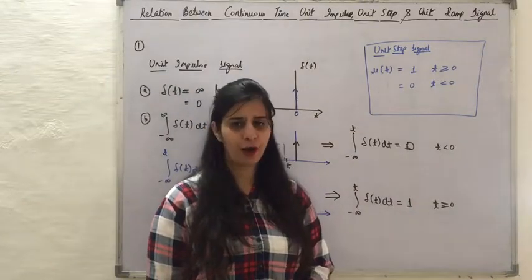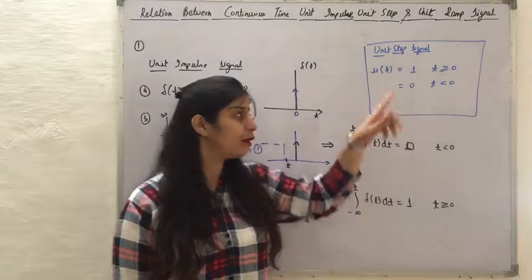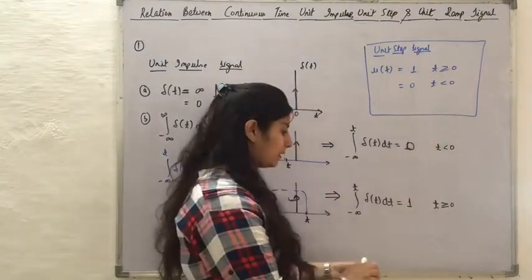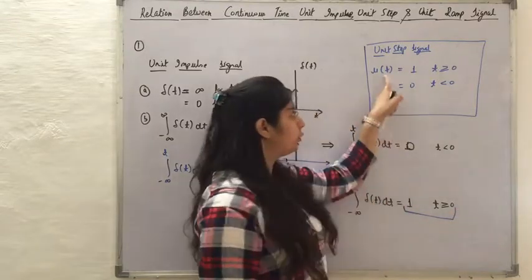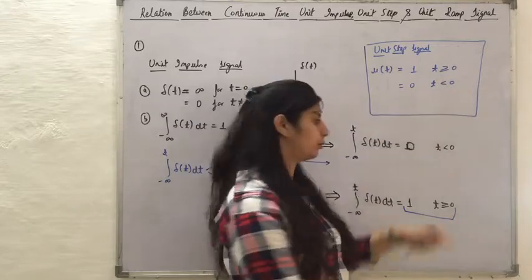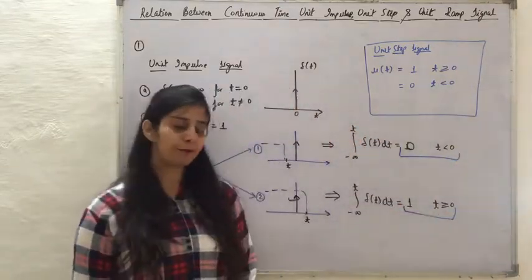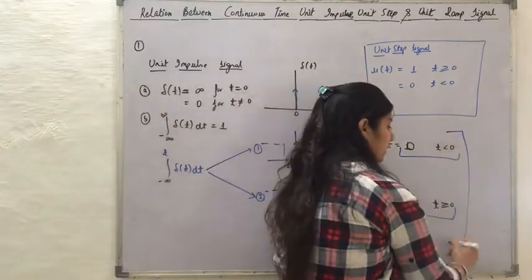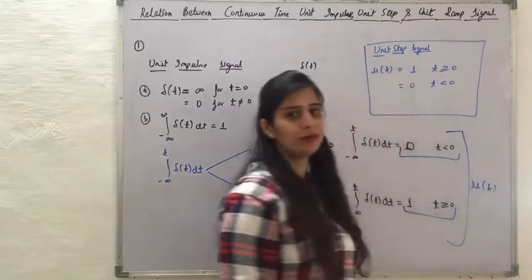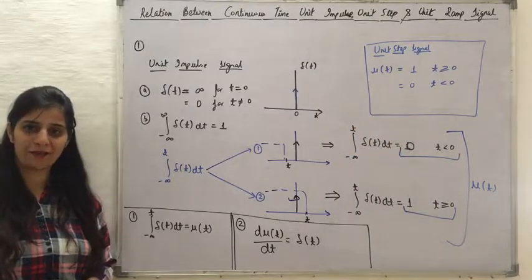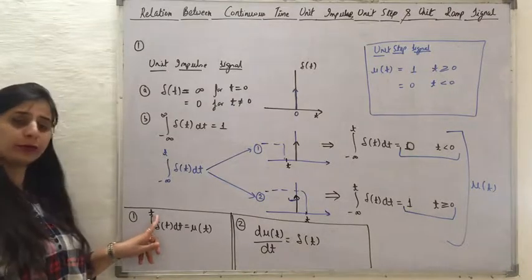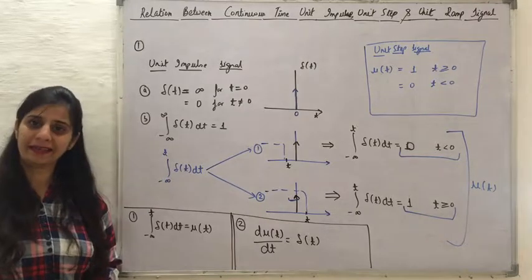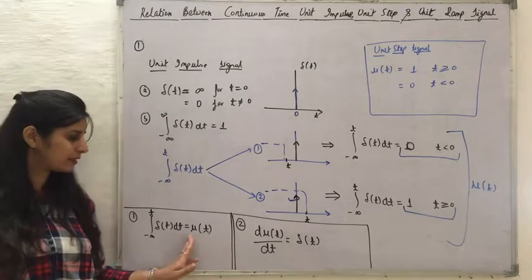From the definition of the unit step signal, u(t) equals 1 for t greater than or equal to 0, and u(t) equals 0 for t less than 0. Therefore, this integration can define our unit step signal, which is equal to u(t). So, integrating the unit impulse signal from minus infinity to t gives u(t) — meaning when we integrate the unit impulse signal, we get the unit step signal.